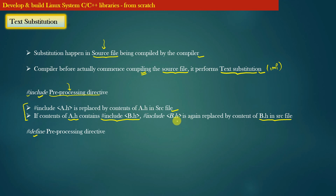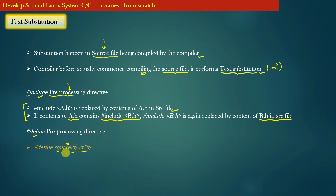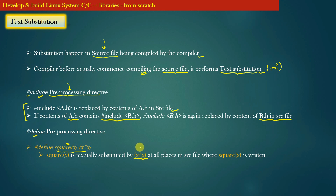Coming to the #define pre-processing directive: it is used to define macros. For example, a simple macro defines SQUARE(x) as the multiplication of two x values, i.e., x*x. Wherever you have written SQUARE(x) in your source file, that call will be textually substituted by the definition of the macro — x*x — at all places in the source file.